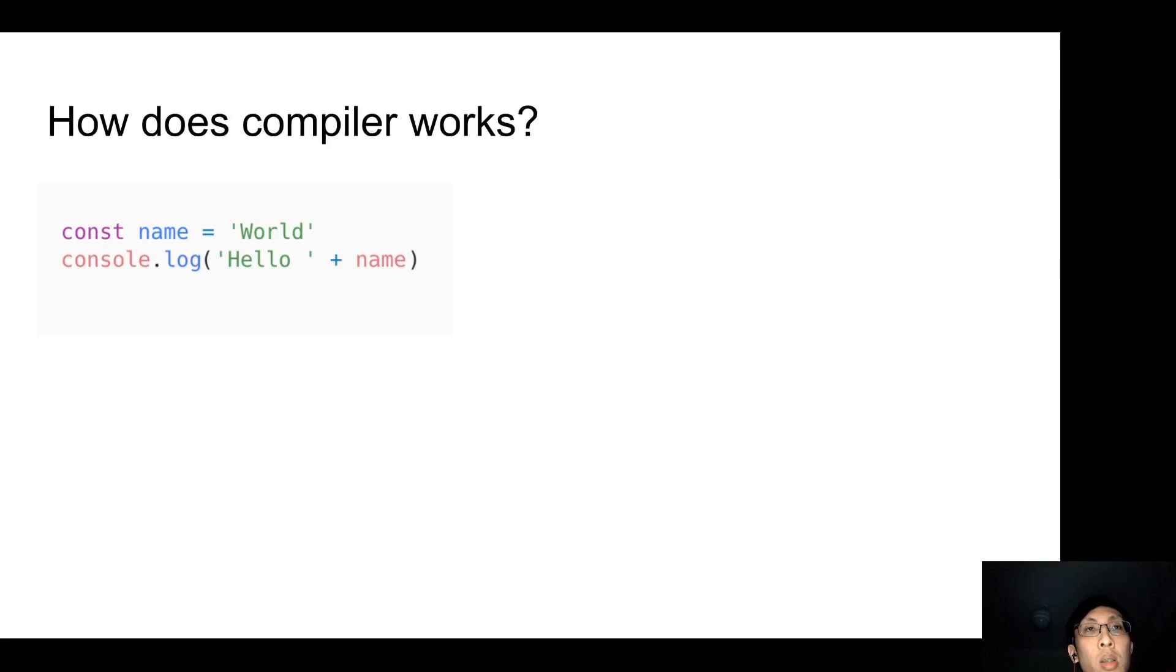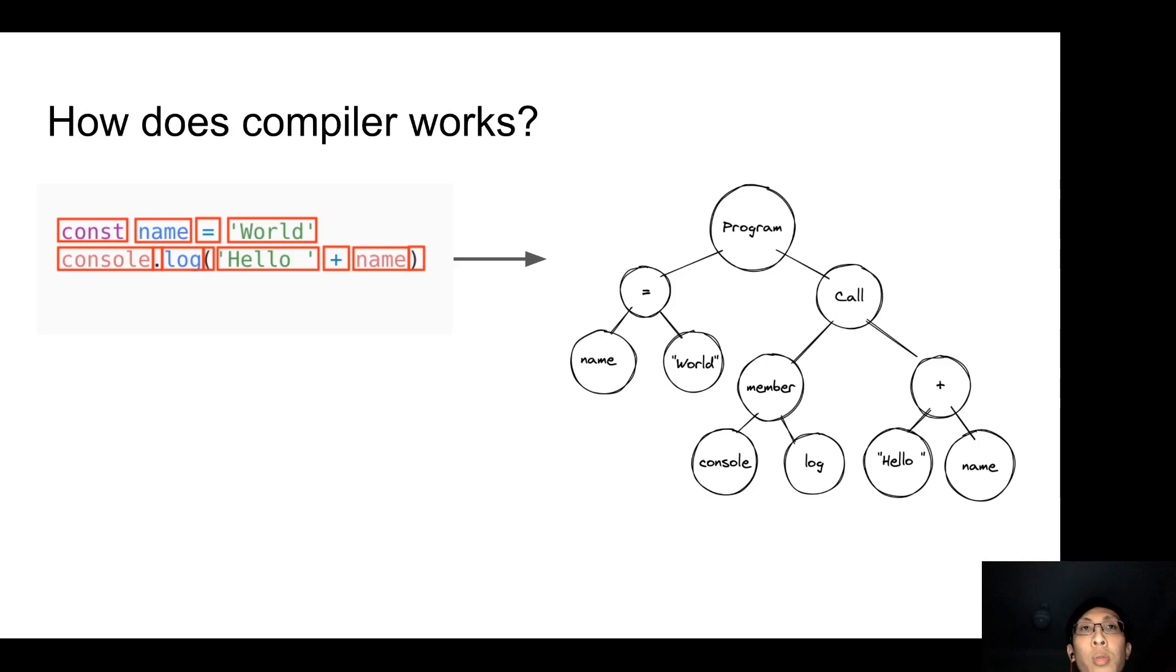A compiler first reads through your source code character by character, and then breaks it down into smaller pieces called tokens. A compiler then goes through the list of tokens and creates a structure, a tree-like structure based on the grammar of the language. The tree structure is what we call abstract syntax tree or AST for short. It is a tree representation of the input code.